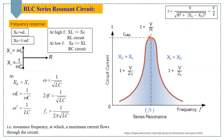Because this circuit functions optimally at resonance frequency, it is also called an acceptor circuit. At resonance frequency the impedance of the circuit is at its minimum, so it easily accepts current whose frequency equals the resonance frequency. That's all for today's lecture — thank you for watching, please subscribe to my channel and share with your friends.